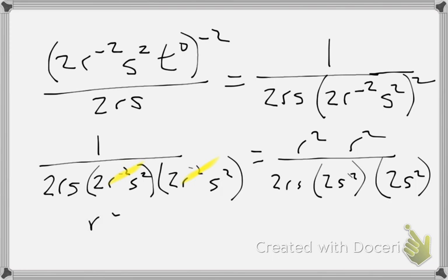So I have r to the 4th over 8rs to the 5th. Is the problem finished? I have r on top and r on the bottom. So let's reduce. So I have r to the 3rd, all of it over 8s to the 5th. Now, was this?